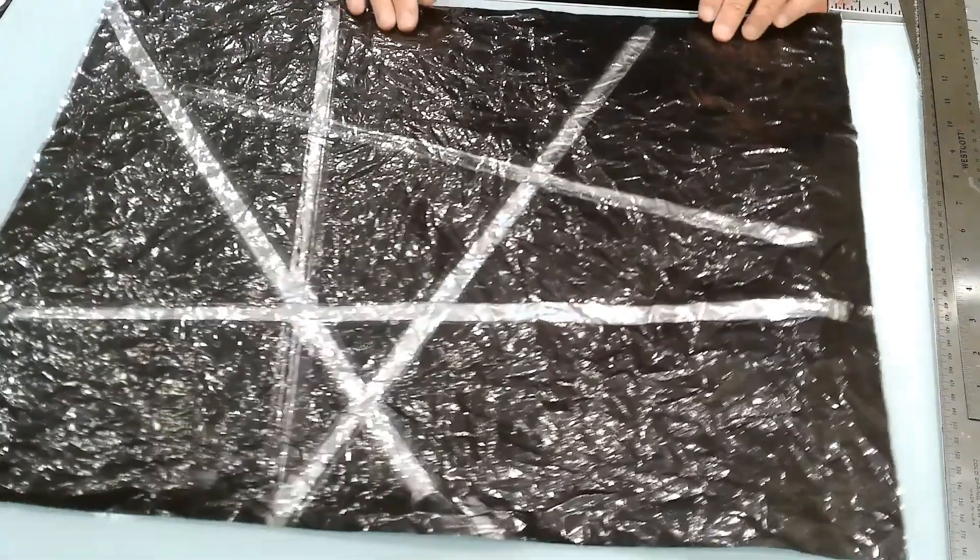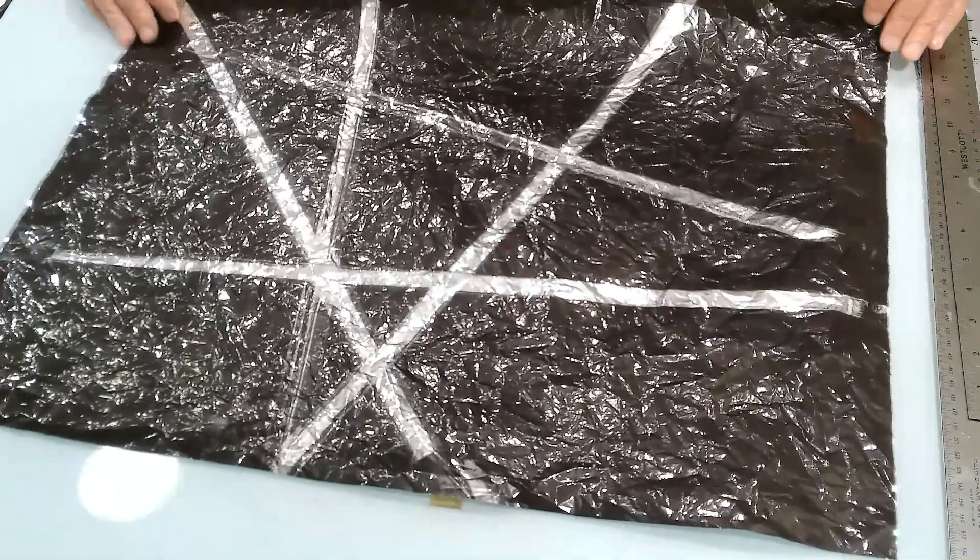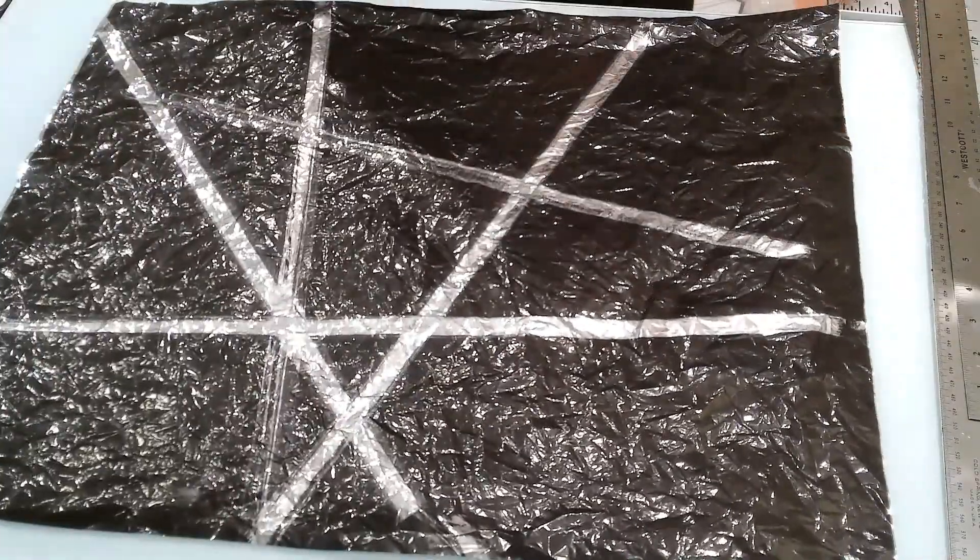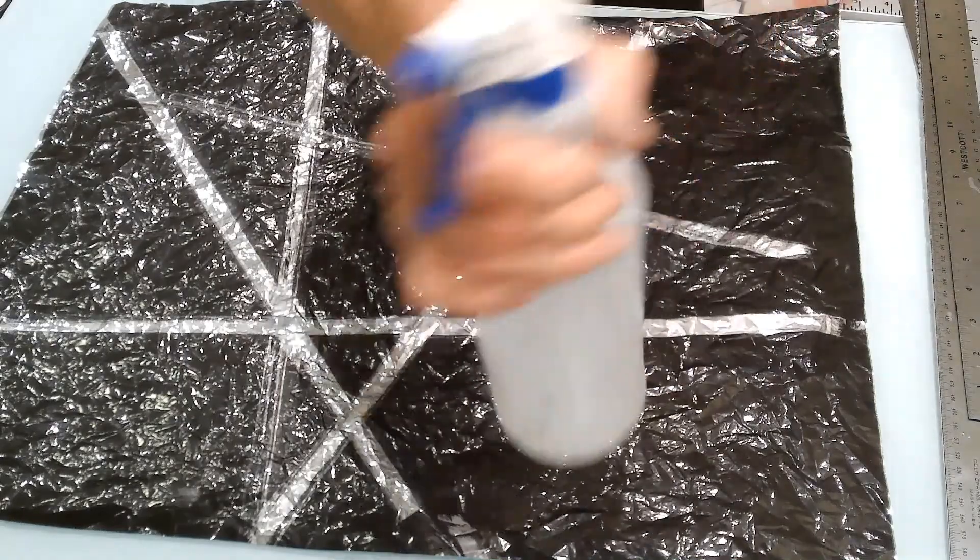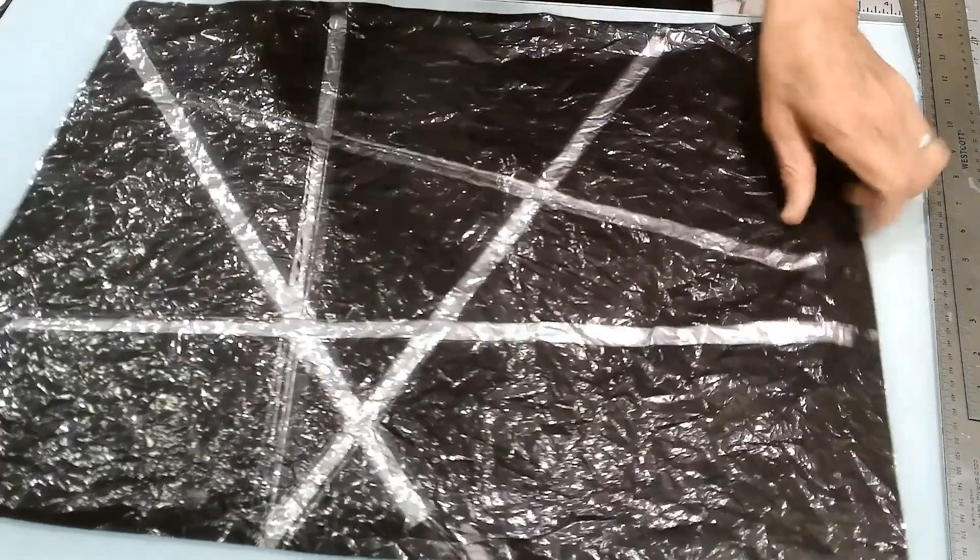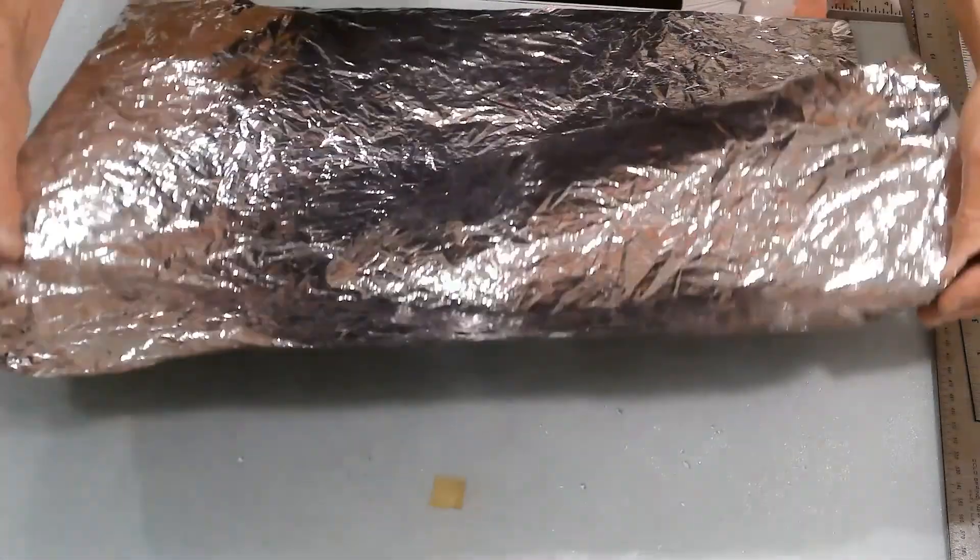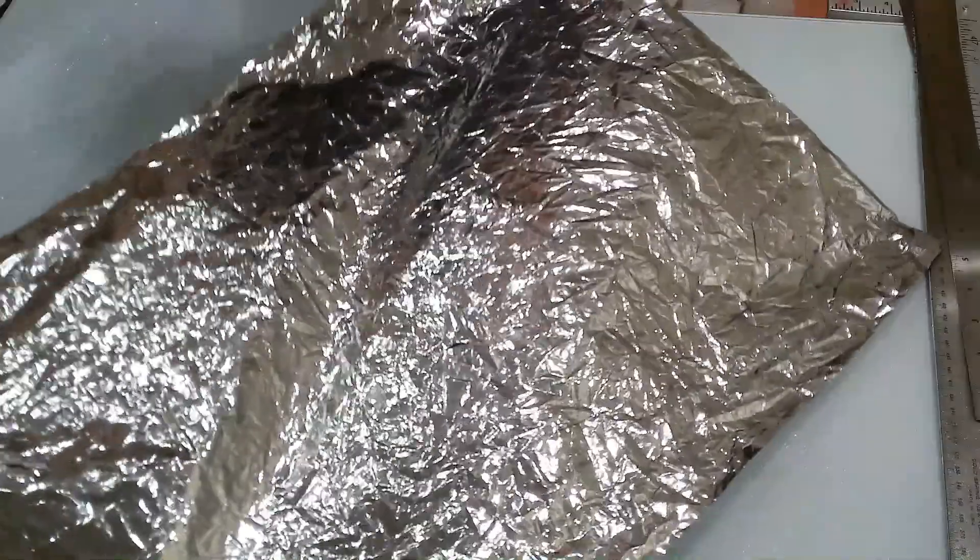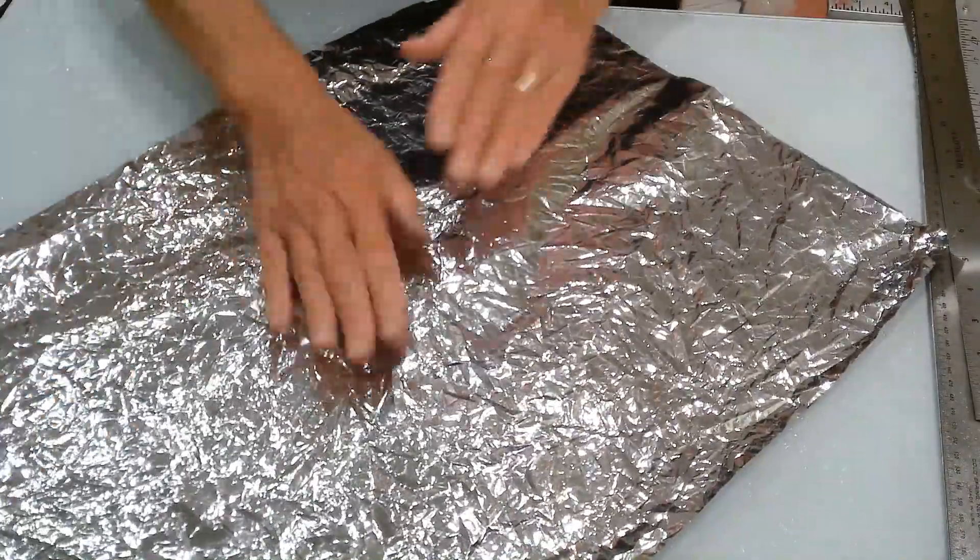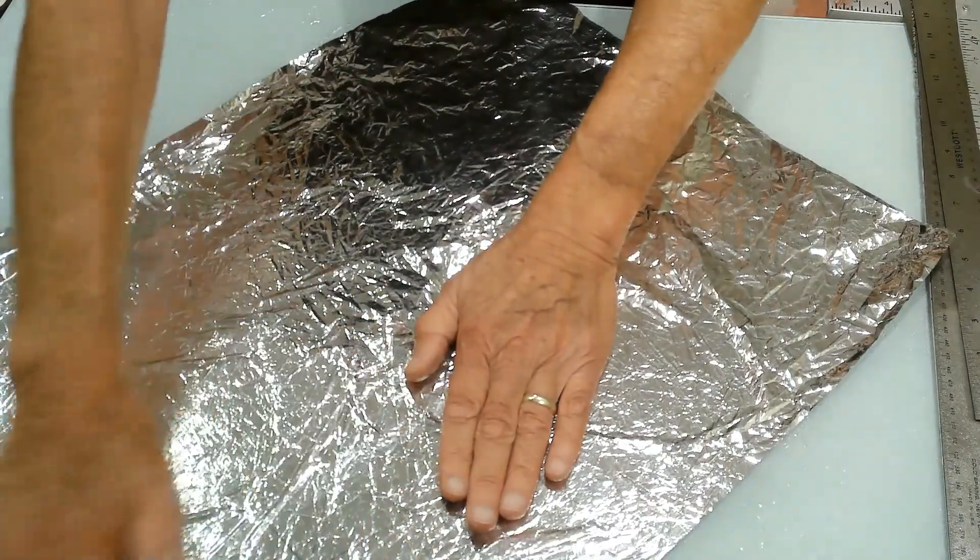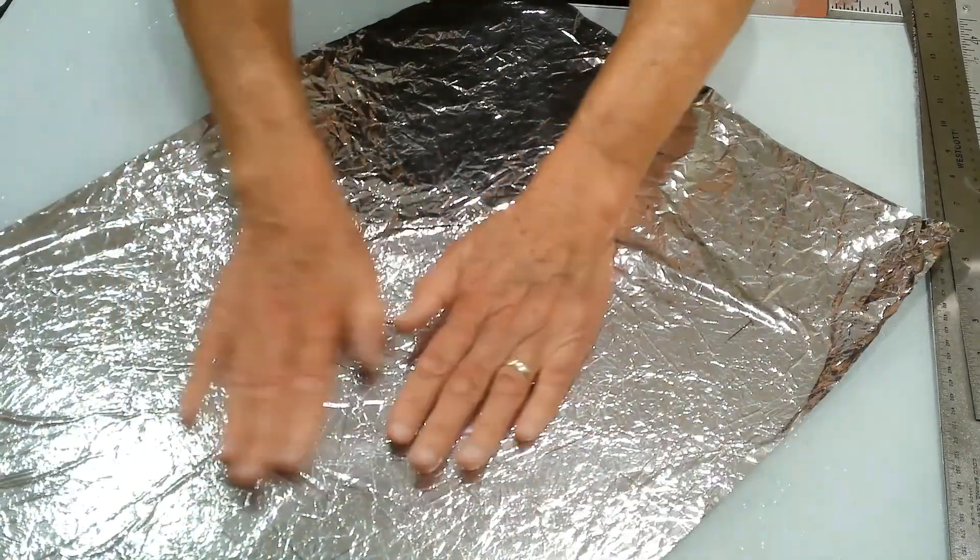Well, here is the sail material that we just modified. Now I'm going to use a spray bottle of water and lightly mist my glass work surface here. Then I'm going to put the front face of the kite material on the glass and have the back facing me and smooth it out.